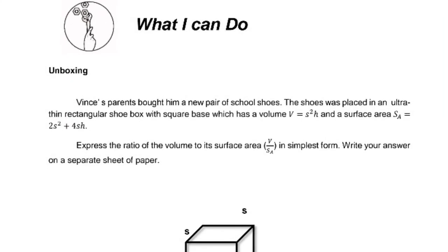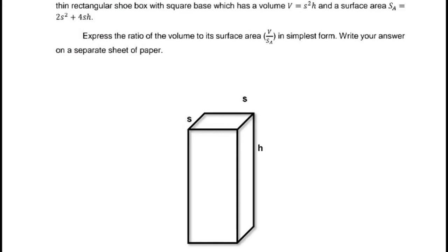What I Can Do — Unboxing: Vince's parents bought him a new pair of school shoes. The shoes were placed in an ultra-thin rectangular shoebox with a square base, which has a volume of V equals S squared times height, and a surface area of SA equals 2S squared plus 4SH. Express the ratio of the volume to the surface area, V over SA, in simplest form. Write your answer on a separate sheet of paper.